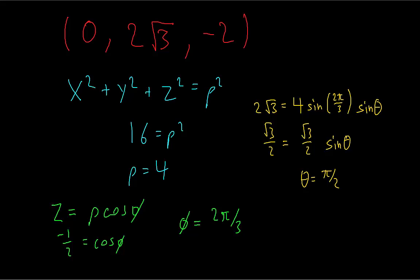But you have to make sure it also satisfies the y equation. Because if you picked theta equals 3 pi halves, you would get x equals 0, but then you would also get y equals negative 2 square root 3. So clearly theta equals pi halves is the only valid answer.